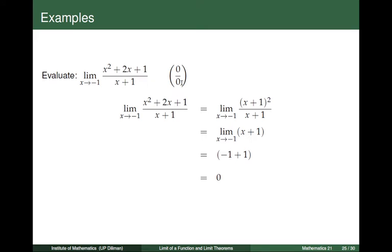Now, what do we do? Clearly the numerator is factorable. In fact, it is a perfect square. So x squared plus 2x plus 1 is the same as x plus 1 quantity squared. So x plus 1 is a common factor of the numerator and the denominator. Dividing the numerator x plus 1 squared by x plus 1, we get x plus 1. So to get the limit of the given expression, we may take the limit of x plus 1 as x tends to negative 1. Plugging in negative 1 to x, we get negative 1 plus 1, which is equal to 0.